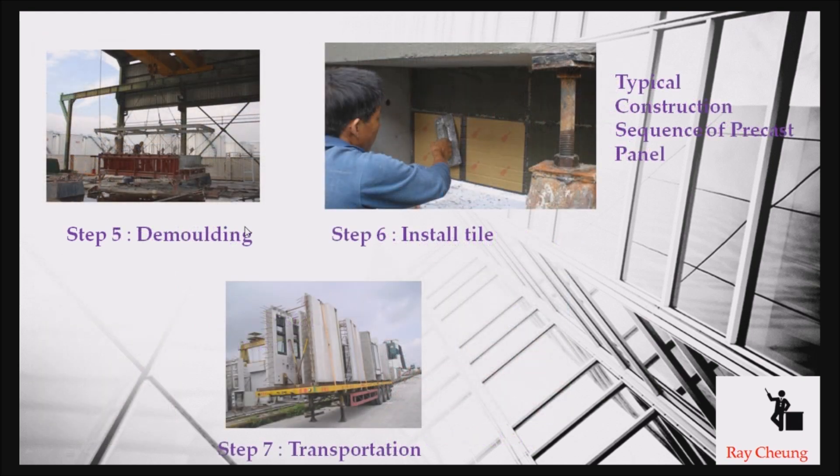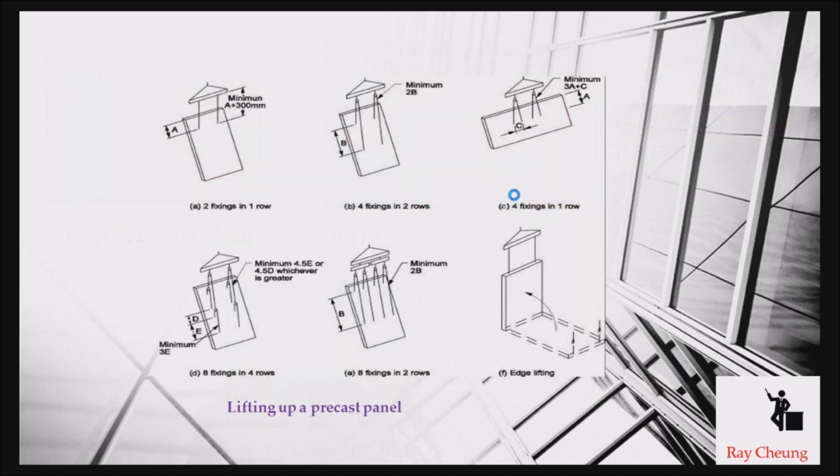After concreting, if the strength is good enough, we can demold, take out the mold, and then install the tiles and finishes. This is transportation to your construction site. This is the typical step where you need to raise up your precast panel.